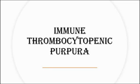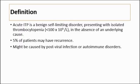Today I'm going to be talking about immune thrombocytopenic purpura. The definition of immune thrombocytopenic purpura: it is a benign self-limiting disorder presenting with isolated thrombocytopenia, which means there is low platelet levels less than 100 × 10⁹ per liter, in the absence of an underlying cause.